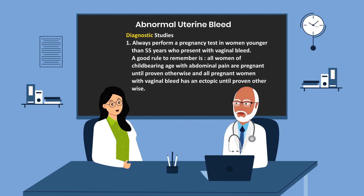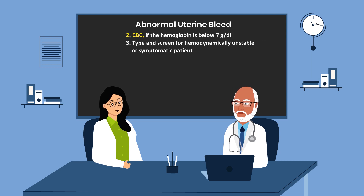What diagnostic studies should be done? Always perform a pregnancy test in women younger than 55 years who present with vaginal bleeding. A good rule to remember: all women of childbearing age with abdominal pain are pregnant until proven otherwise, and all pregnant women with vaginal bleeding have an ectopic pregnancy until proven otherwise. Perform a CBC — if the hemoglobin is below 7, transfusion should be considered. A type and screen should also be done, especially for hemodynamically unstable or symptomatic patients.